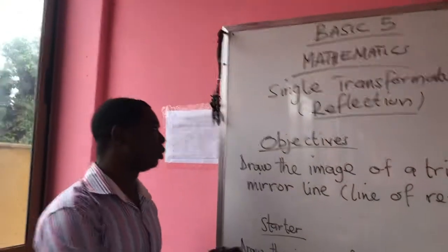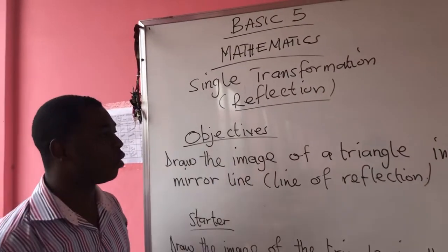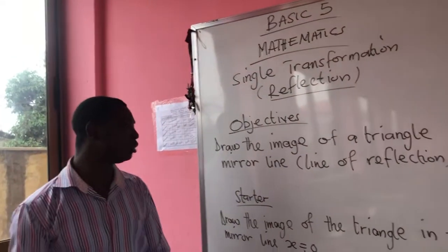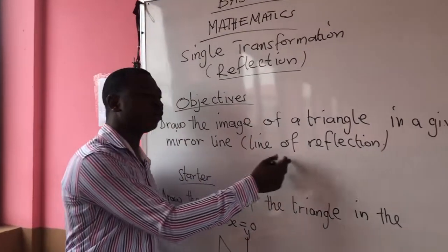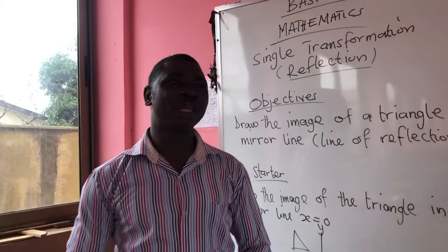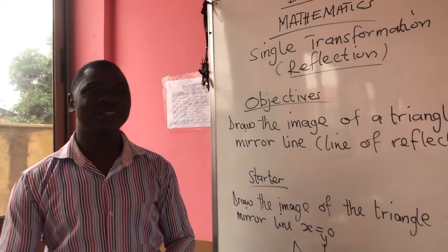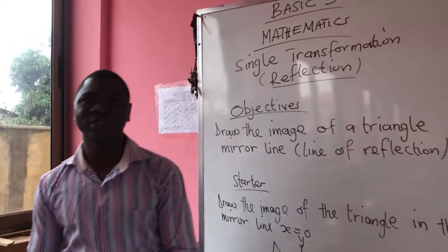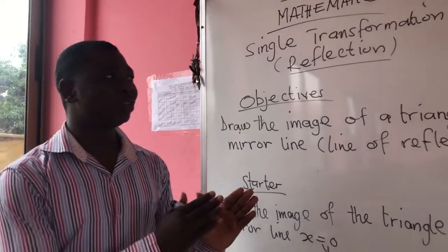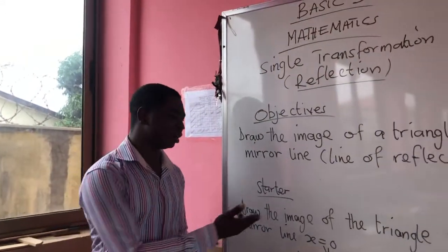Our objective today is to draw the image of a triangle in a given mirror line, which is the line of reflection. Previously we learnt how to reflect objects using y equal to 0 or x equal to 0. Today we continue by using y equal to x.